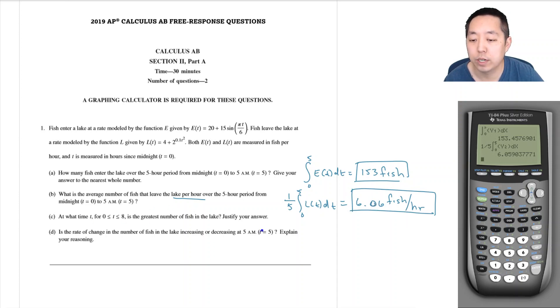Okay, part C. At what time is the greatest number of fish in the lake, and justify your answer. So we've got to look at the rate of change of the fish that are entering. If I look at the rate of change of the fish entering and leaving, it's equal to the number of fish entering minus the number of fish leaving.